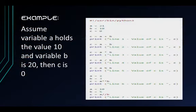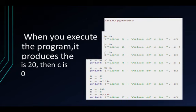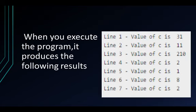Now for an example using Python, let's assume that variable A holds the value 10 and variable B holds the value 20. Using the different arithmetic operators, we will get the value of C. When you execute the program, it produces the following results.